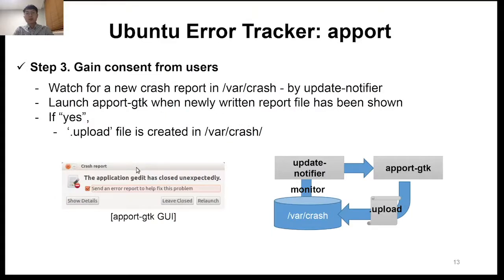The next step is gaining consent from users. The file created in the previous step has a .crash file extension in the /var/crash directory and has the user permissions of the crashed program. If there is a crash report newly created, the update notifier running on the OS executes the apport-gtk program, which is the GUI users often see when a crash occurs. If the user agrees to upload, it creates a file with an .upload file extension in the /var/crash directory.